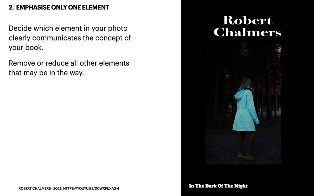Number two: emphasize only one element. Decide which element in your photo clearly communicates the concept of your book, then remove or reduce all other elements that may be in the way. I've reduced the author name at the top slightly and put it in plain white. The title at the bottom is in plain white. I've also changed the color of the coat the woman is wearing — you can still faintly see the trees through the dark, but the woman's coat stands out, indicating a person on a forest track.